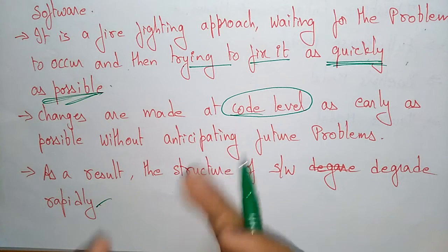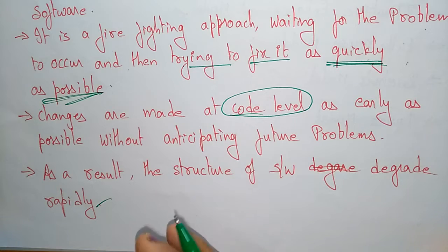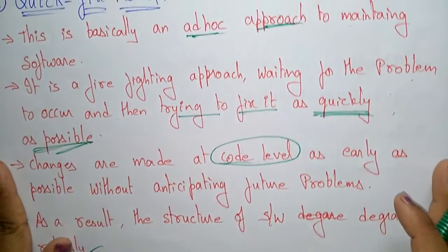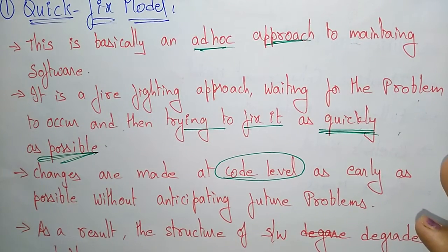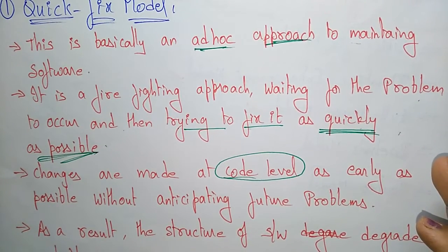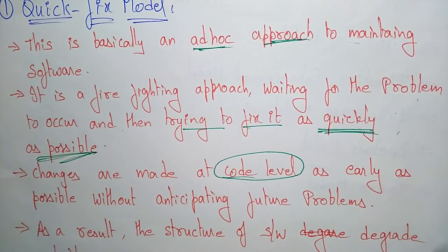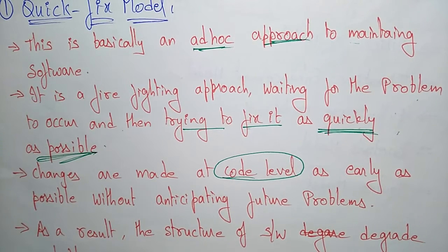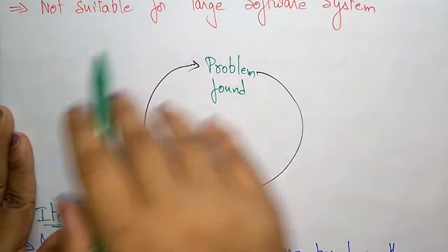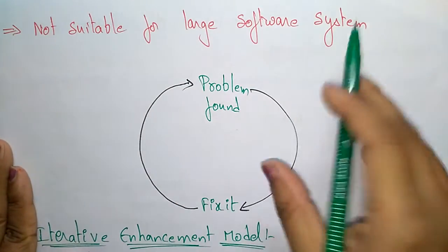When following the quick fix model, the structure is not moving forward. For small projects it is okay, but when dealing with large projects it is difficult to follow and maintain this type of model. Only for small projects or small organizations can you go for the quick fix model. This model is not suitable for large software systems.